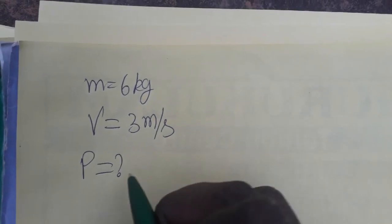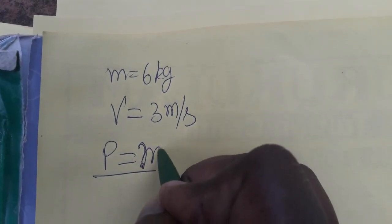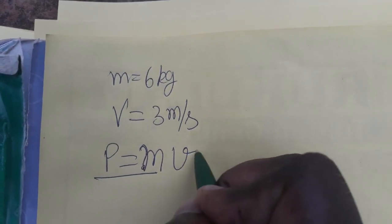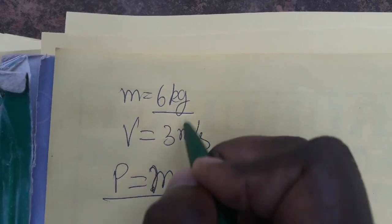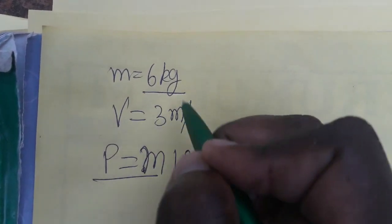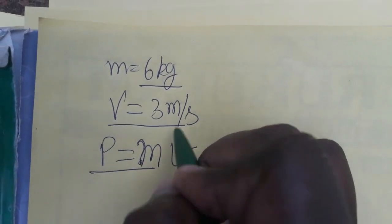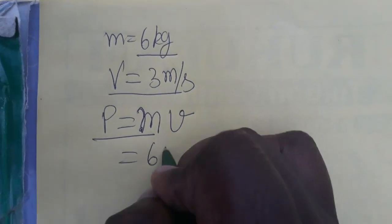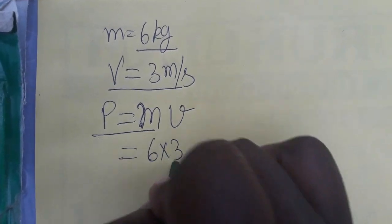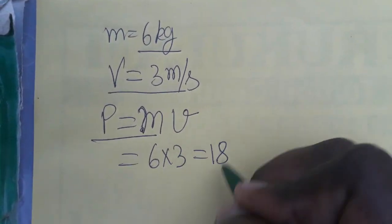In this video we are going to learn what is momentum. Momentum is a product of mass and velocity. So mass is given as 6, velocity is given as 3. So 6 into 3, the answer will be 18.